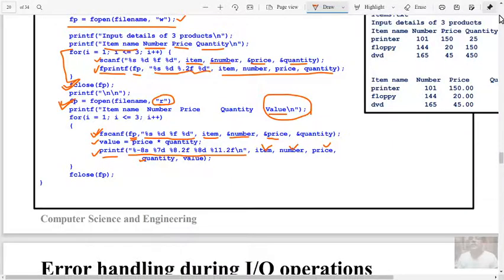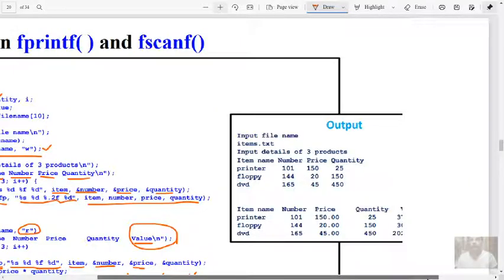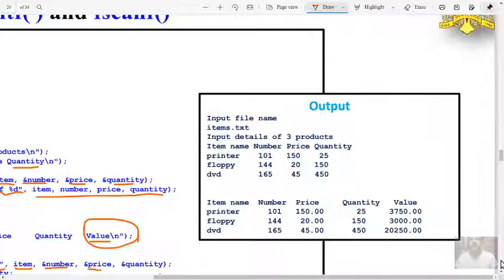Here is the output. File name specified, three product details typed. Whatever data entered here is displayed using the same with one additional column, that is value. 115 times 25 is 3750, 20 times 30 is 30,000, likewise 45 times 450 is 20,250. So finally evaluate all the data, calculate and additional column display. This is the use of fprintf and fscanf on the file.